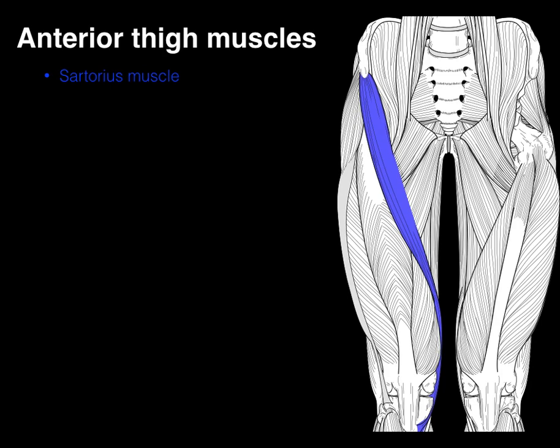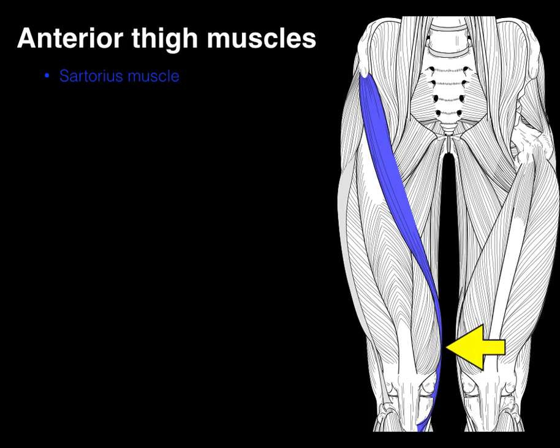The sartorius is the longest muscle in the body. It arises from the anterior superior iliac spine, courses laterally, then crosses medially, goes right behind the knee joint, and inserts medial to the tibial tuberosity. Its main functions are to flex, abduct, and externally rotate the hip.